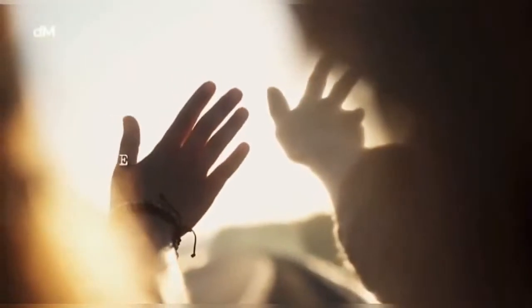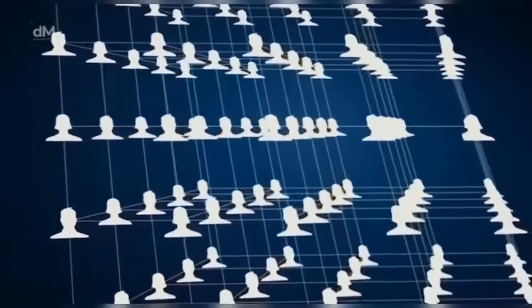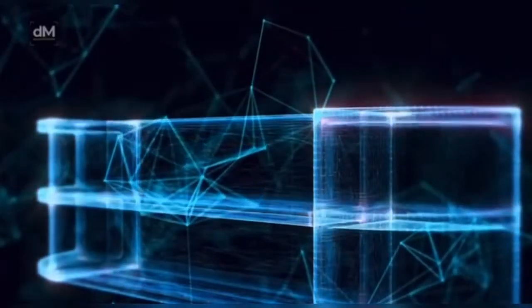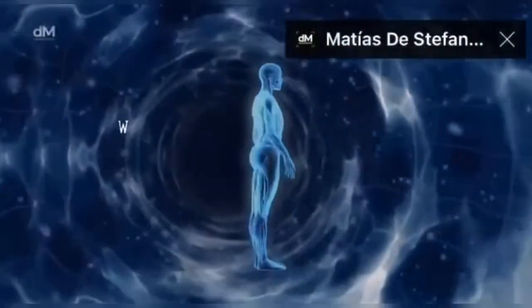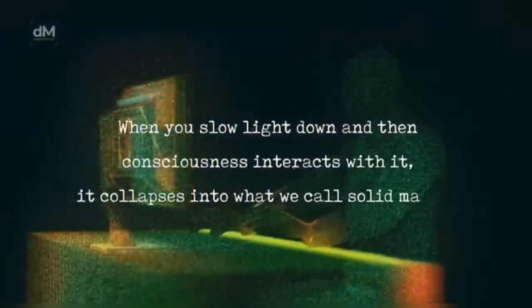One thing people don't understand is that everything in the third dimension is made of light. And so we are light and light is us. We know that the illusion of this avatar body and this chair I'm sitting on and the table that you're sitting at, this is slowed down light waves. When you slow light down and the consciousness interacts with it, it collapses into what we call solid matter. So solid matter is actually an illusion.